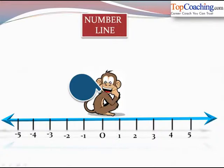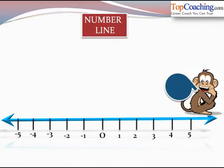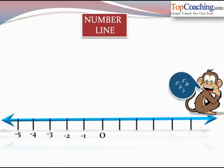But this monkey is very notorious. What he does is he moves towards the number line and takes away all these numbers which are on the right hand side of zero. So this bag contains numbers like 1, 2, 3, 4, 5 and so on.